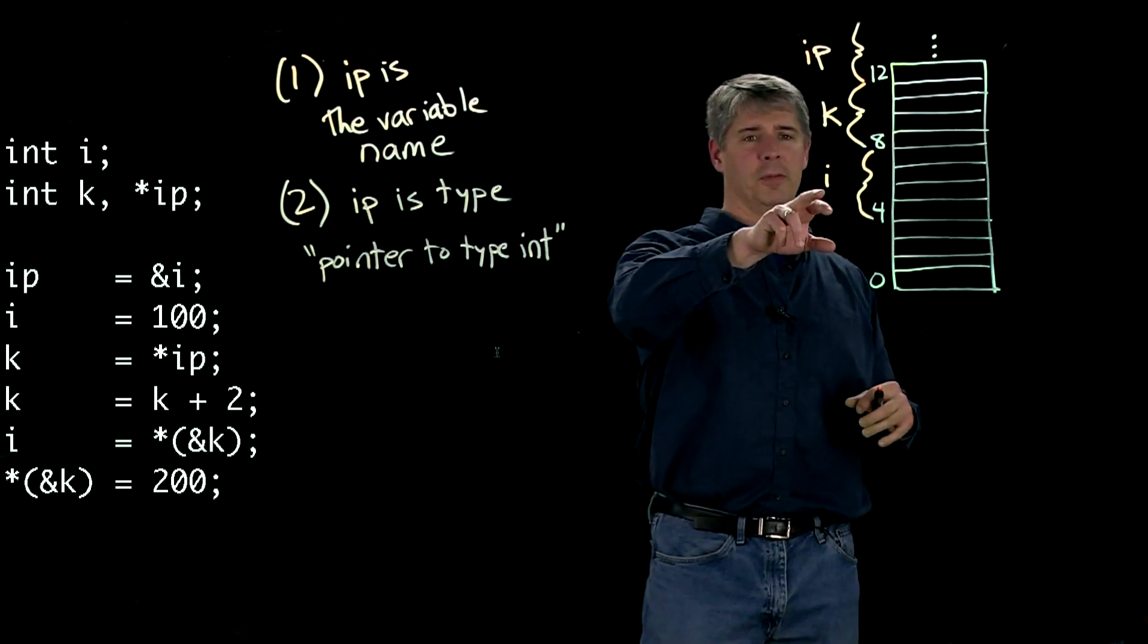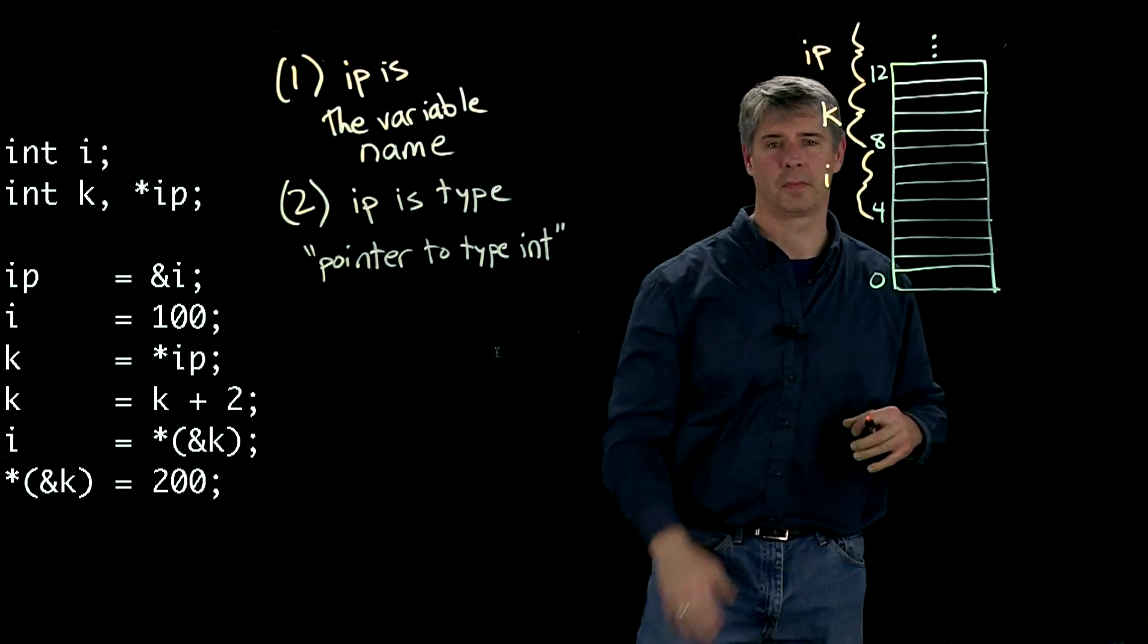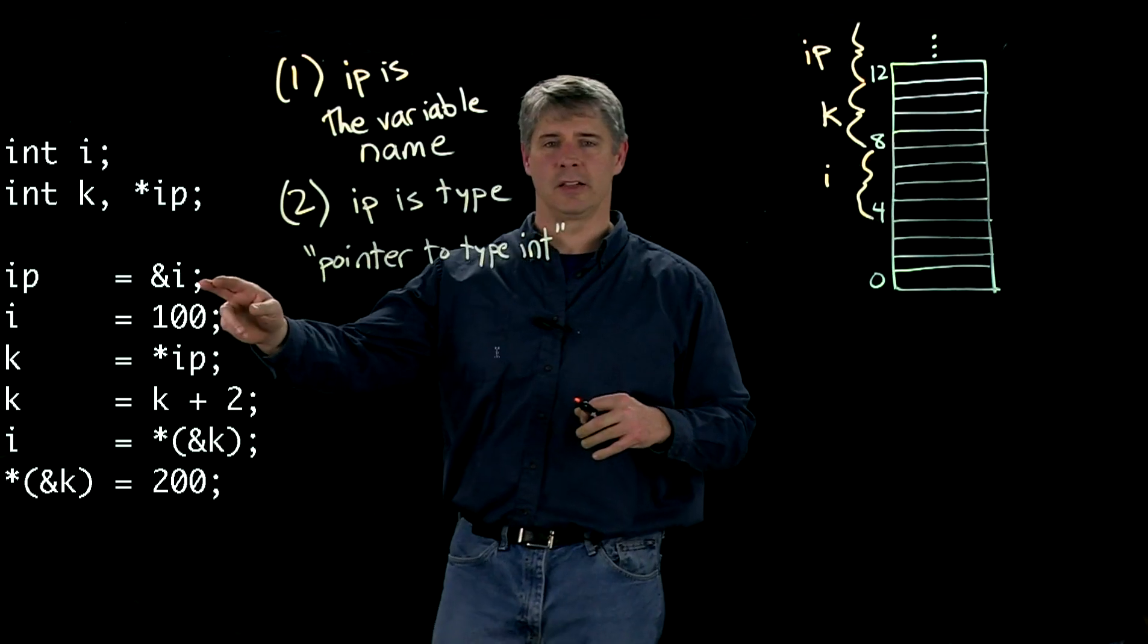Okay. So we've got our three variables. Integer, integer, pointer to type integer. Now let's go ahead and take a look at the next line.